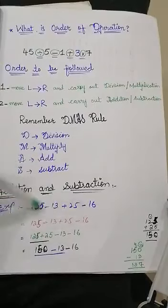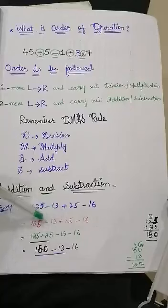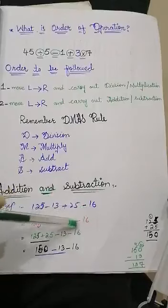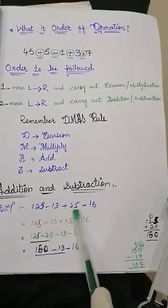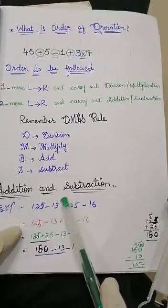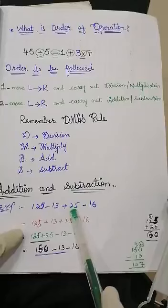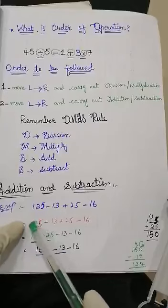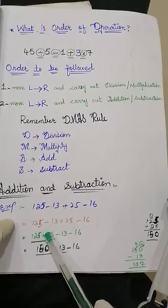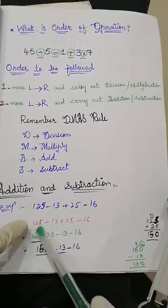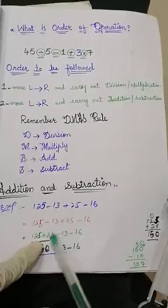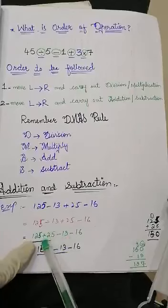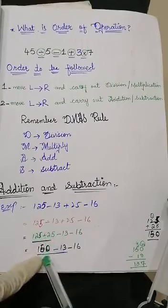First of all, write the question as it is: 125 minus 13 plus 25 minus 16. According to the DMAS rule, when we have only addition and subtraction, we group the positive values together. Here, minus 13 and minus 16 are negative, and plus 25 is positive. So we can write: 125 plus 25 minus 13 minus 16. Adding: 125 plus 25 equals 150.